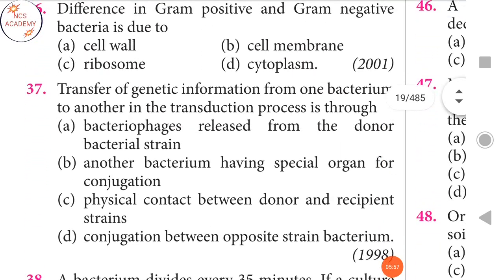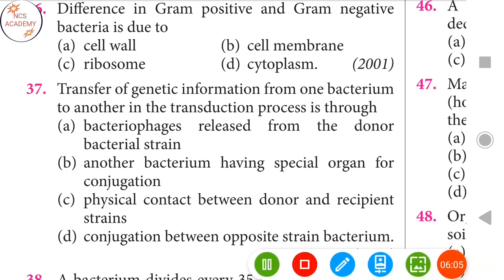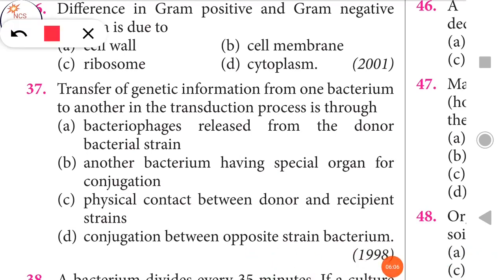Next question: Transfer of genetic information from one bacterium to another in the transduction process is through the bacteriophages released from the donor bacterium strain. That is the right answer.